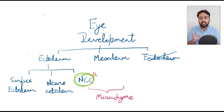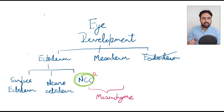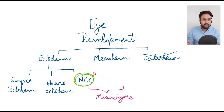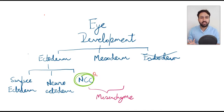The takeaway is that most eye structures develop from the neural crest cells. So the easiest way to remember eye embryology is to remember the structures that are NOT derived from neural crest cells. If you remember the structures derived from surface ectoderm, neuroectoderm, and mesoderm — around 15 different structures — everything else is coming from the neural crest cells.